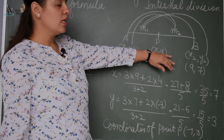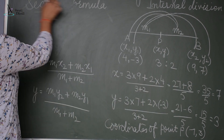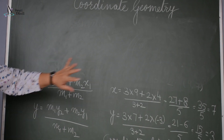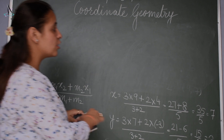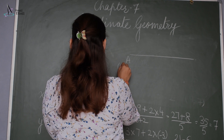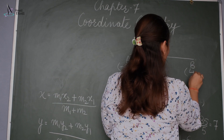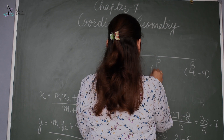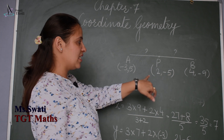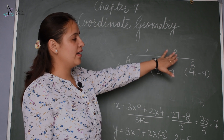This is how we find the coordinates of a point which divides a line segment in a given ratio. Now the other kind of question that can be asked is: instead of finding the point, you are asked to find the ratio. Suppose A = (−3, 5), B = (4, −9), and the point of division is (2, −5). Find the ratio in which this point divides line segment AB.